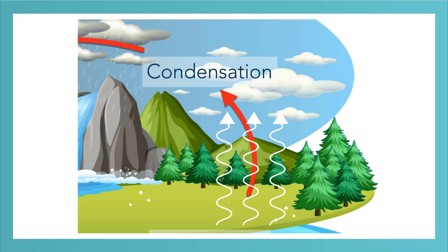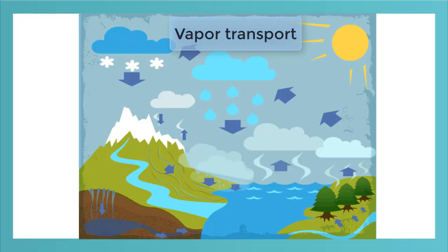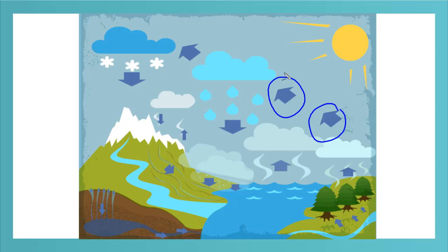When water moves through the atmosphere but doesn't fall to the earth, it's called vapor transport. These arrows represent water condensating, and this arrow represents vapor transport, moving from one cloud to the next.